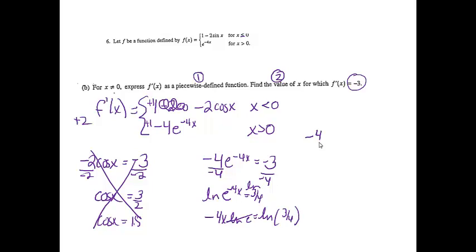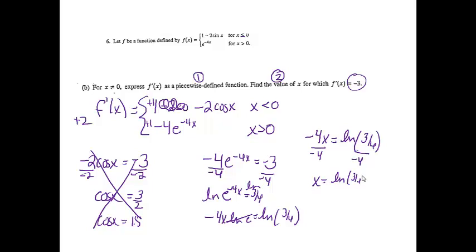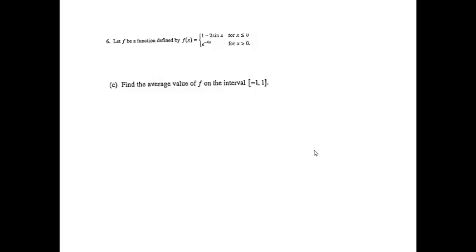ln e cancels out, so we get negative 4x equals ln of 3/4. Dividing both sides by negative 4, x equals ln(3/4) divided by negative 4. Finding that value of x was worth only one point.